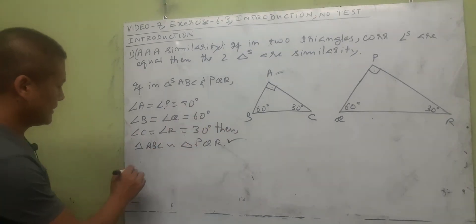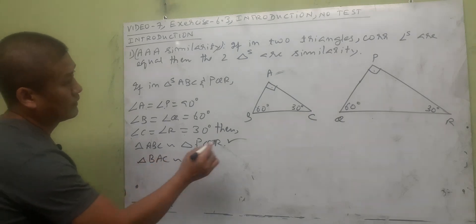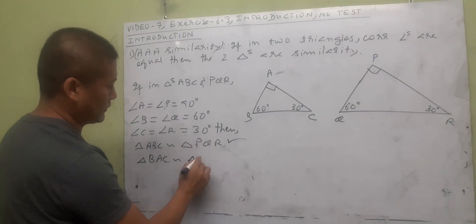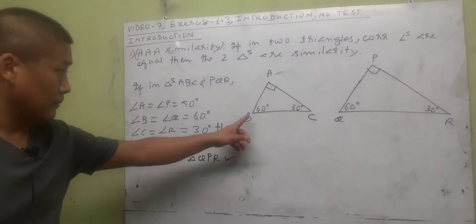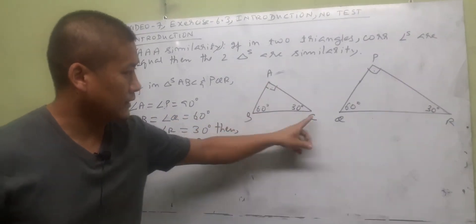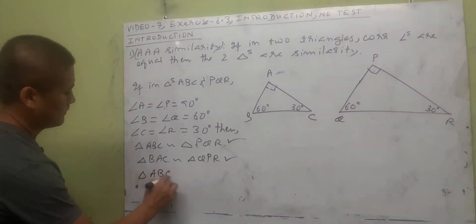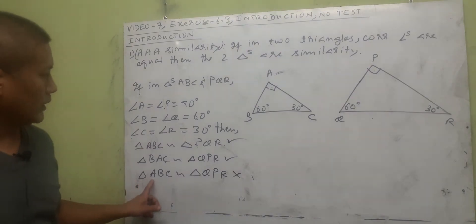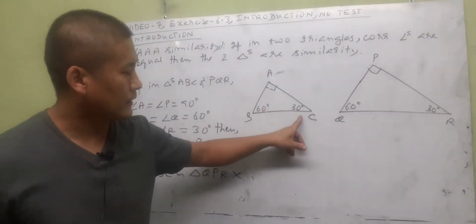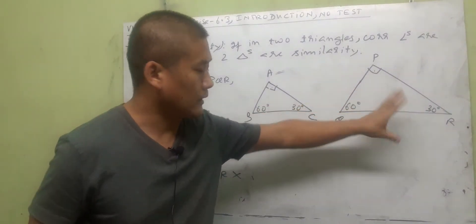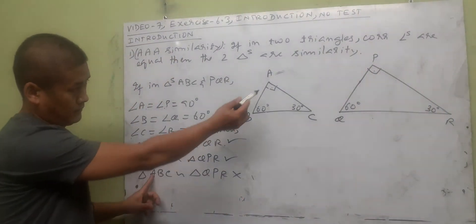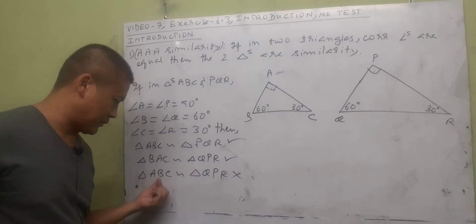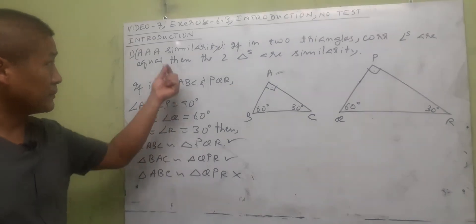We must write the correct order of letters when writing similar triangles. For example, you can also write triangle BAC ~ triangle QPR, going 60-90-30 to 60-90-30. But if you write ABC ~ QPR, that would be wrong because A is 90 degrees but Q is 60 degrees — the order is wrong. The correct placement of corresponding vertices is very important.